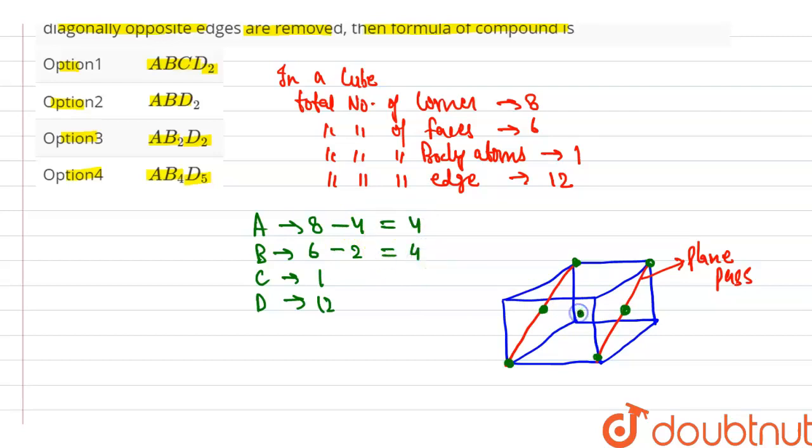And one body centered atom also removed. So 1 minus 1, that is equal to 0. And two edges are involved. Then we removed two edges also. Then D is equal to 10.